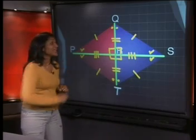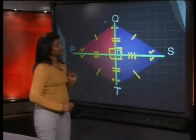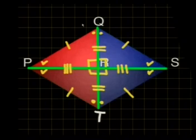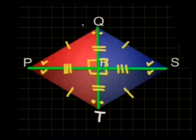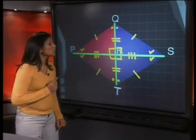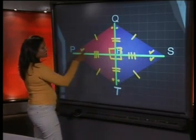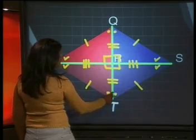That means that even though the diagonals bisect one another, the diagonals are not equal in length to one another. Now look at the angles at R — they are all 90 degrees. The diagonals are perpendicular bisectors of each other: perpendicular because they are at 90 degrees, and bisectors because they cut each other in half. The diagonals also bisect the opposite angles. Diagonal PS bisects the angle at P and the angle at S. Diagonal QT bisects the angle at Q and the angle at T.